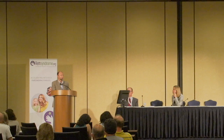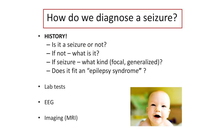How do we diagnose a seizure from a medical specialist point of view? The first and most important way is by history. That's why doctors ask such detailed questions about the event — when it started, what the child was doing, what happened beforehand, how long did it last, what were the exact details. We ask all those questions because we want to determine whether the episode was a seizure or not.